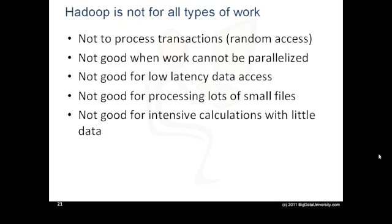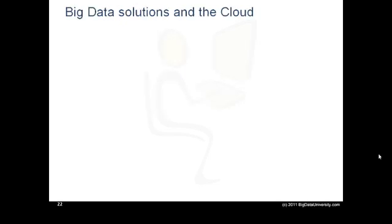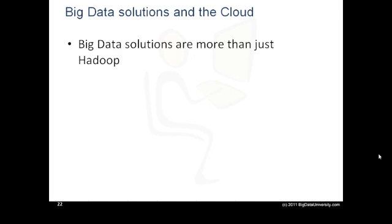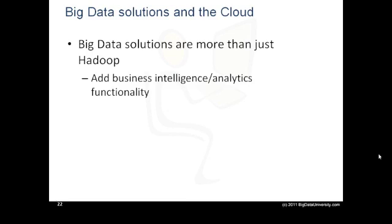Let's move on and talk about big data solutions. Big data solutions are more than just Hadoop. They can integrate analytic solutions to derive valuable information that combines structured legacy data with new unstructured data. Big data solutions may also be used to derive information from data in motion. For example, IBM has a product called Infosphere Streams that can be used to quickly determine customer sentiment for a new product based on Facebook or Twitter comments.